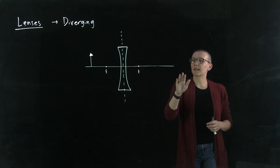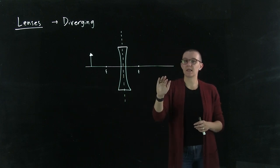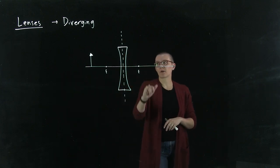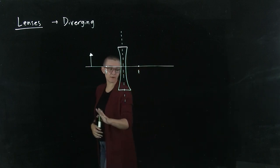This straight line going through the center of the lens is the optical axis. We have our two focal points for our lens here, and we have our object.